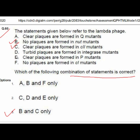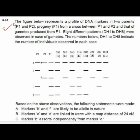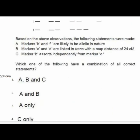Question 61 shows a DNA marker profile in two parents P1 and P2, F1 progeny from a cross, and gametes produced from F1, with eight patterns DH1 to DH8. Option 3 is correct: A only — marker B and F are likely to be allelic in nature.